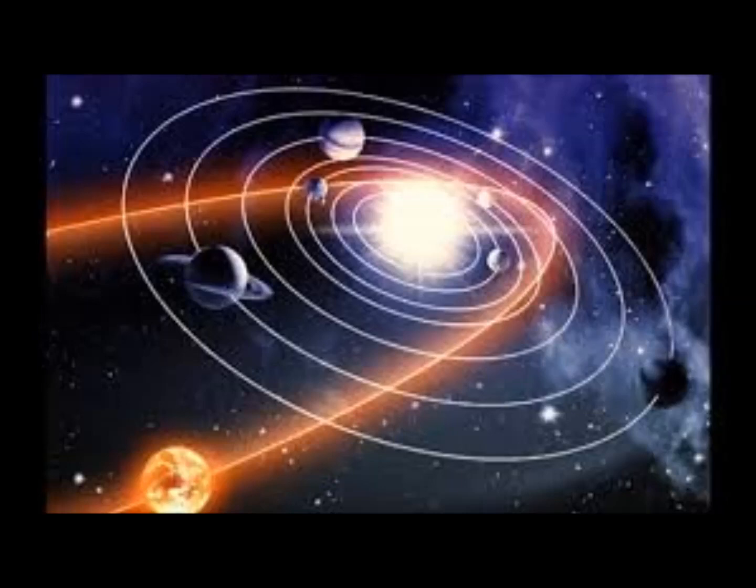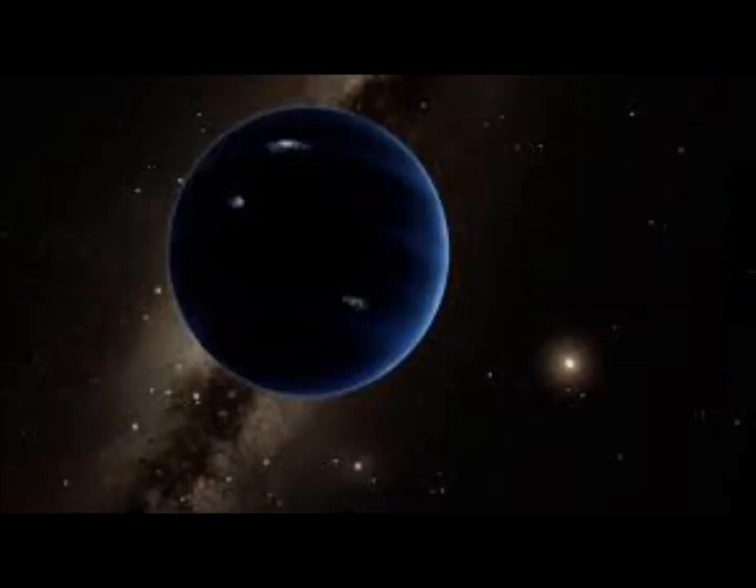It would be bizarre if, say, Jupiter just happened to be inclined 30 degrees relative to the plane that every other planet orbits in. This raises all sorts of questions about how HD 106906b ended up so far out on such an inclined orbit.